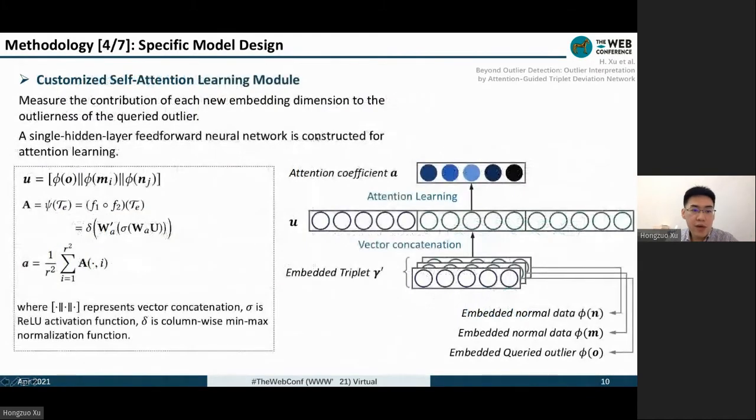As for our self-attention learning model, this model is to measure the contribution of each new dimension to the outlierness of the query outlier. We use a single hidden layer feedforward neural network as the self-attention learning network. The embedded query outlier and two embedded normal data are firstly flattened to a single vector by vector concatenation.